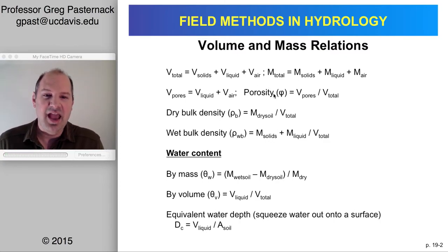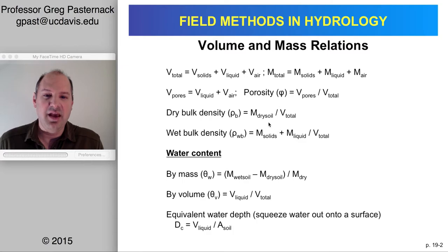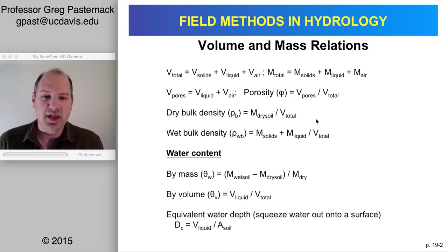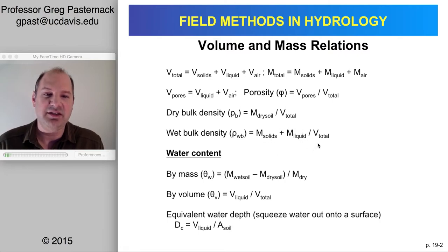Porosity is defined as the volume of pores relative to the total volume of the soil. Dry bulk density, using the symbol rho, is the mass of dry soil versus the total volume of the soil. The wet bulk density is the mass of solids and liquids divided by the total volume — that is, the total mass of solids plus liquids divided by the total volume.